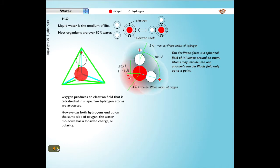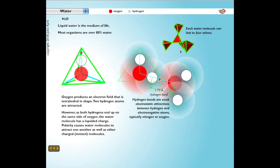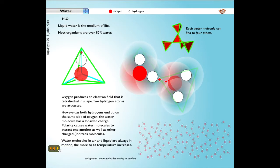Because both hydrogens end up on the same side of the oxygen, the water molecule has a lopsided charge. Polarity causes water molecules to attract one another as well as other charged or ionized molecules. The hydrogen bonds that form are weak electrostatic attractions between hydrogen and electronegative atoms, typically nitrogen or oxygen. Each water molecule can link to four others.